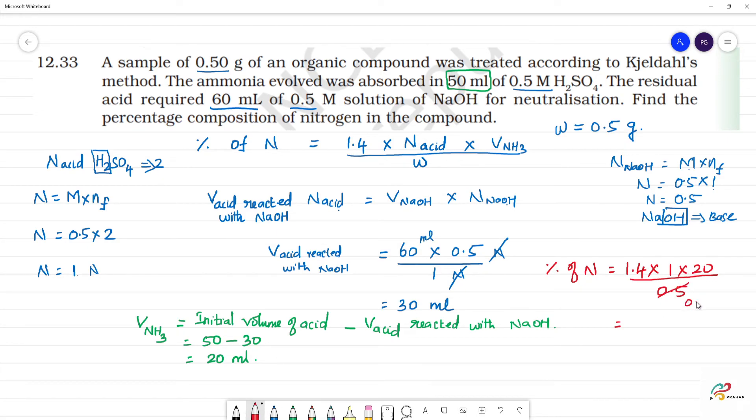This is 0.1, this is 4 times. Into 10, into 10, 14 into 4, 14 into 4 will be 56. This is 56 percentage.